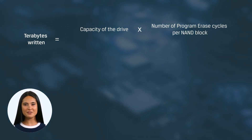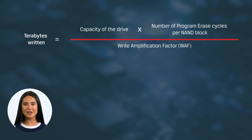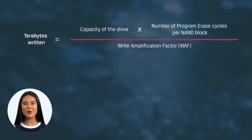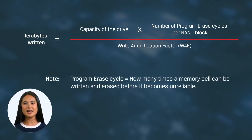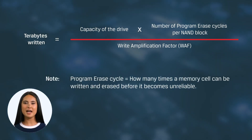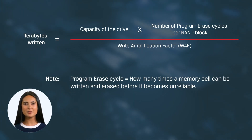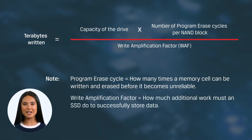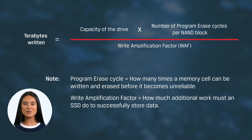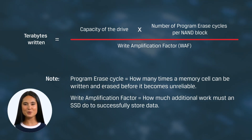Then we divide by the write amplification factor. A quick note: the program erase cycle is determined by how many times a memory cell can be written and erased before it becomes unreliable or inconsistent. And the write amplification factor indicates how much additional work the SSD must do to store data.